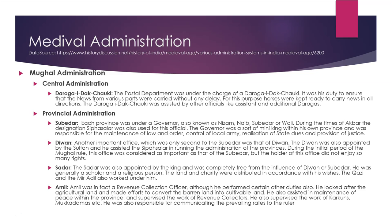The provincial Sadar was appointed by the king and was completely free from the influence of the Diwan or Subedar. He was generally a scholar or religious person. Land and charity were distributed in accordance with his wishes, and the Qazi and Mir Adil also worked under him. The Amil was in fact a revenue collection officer. He looked after agricultural land and made efforts to convert barren land into cultivable land. He also assisted in maintaining peace within the province, supervised revenue collectors, carcoons and mukaddamas, and communicated prevailing rates to the ruler.